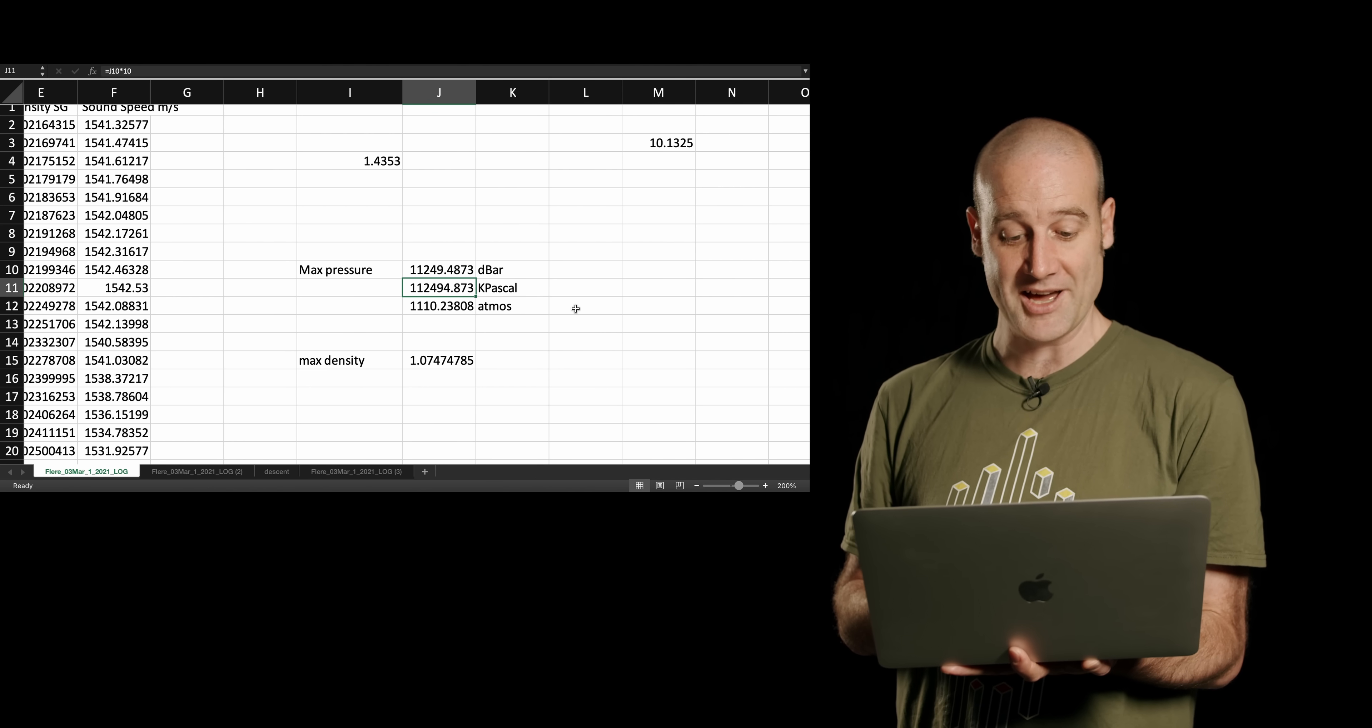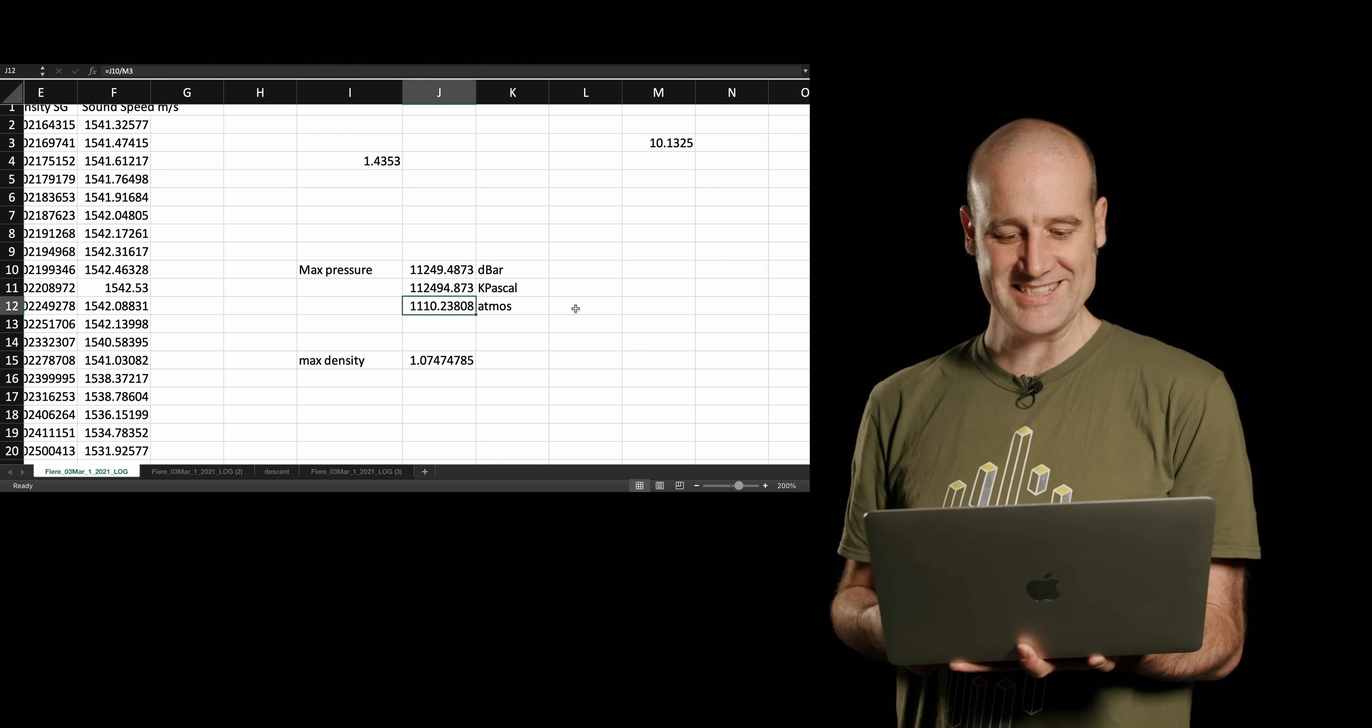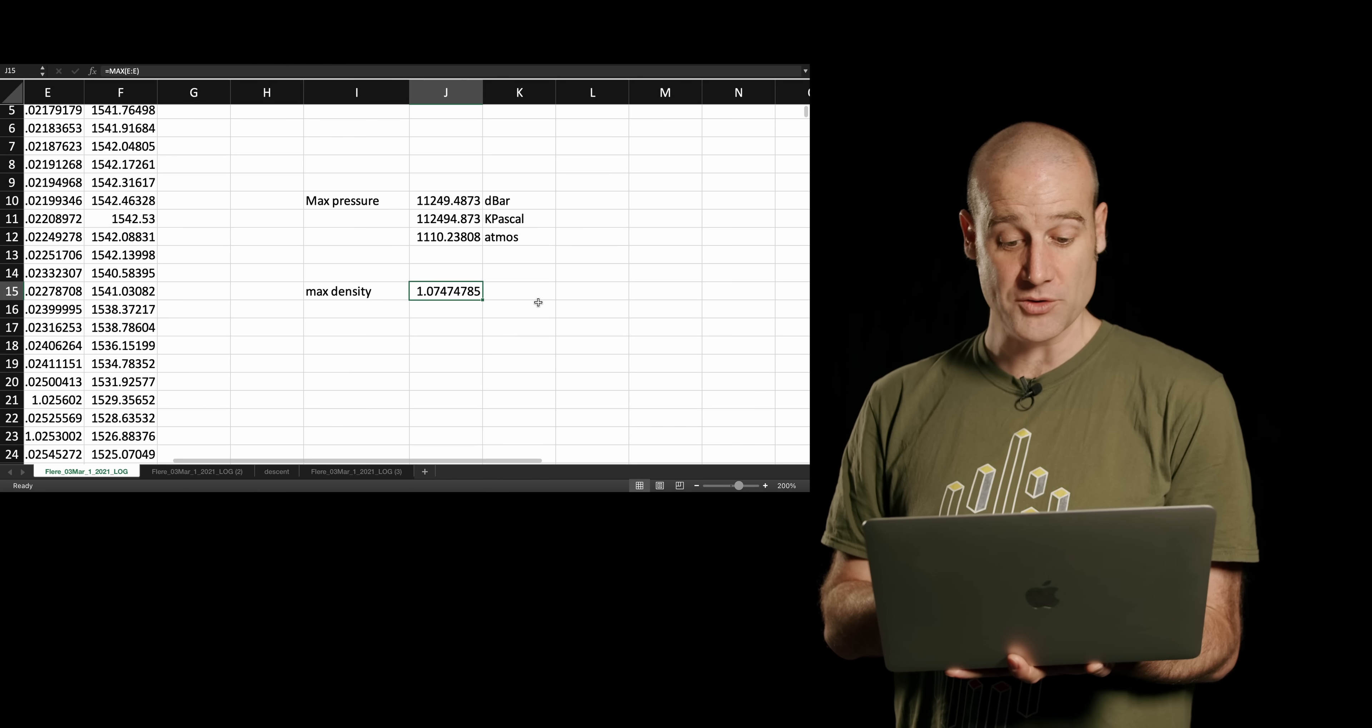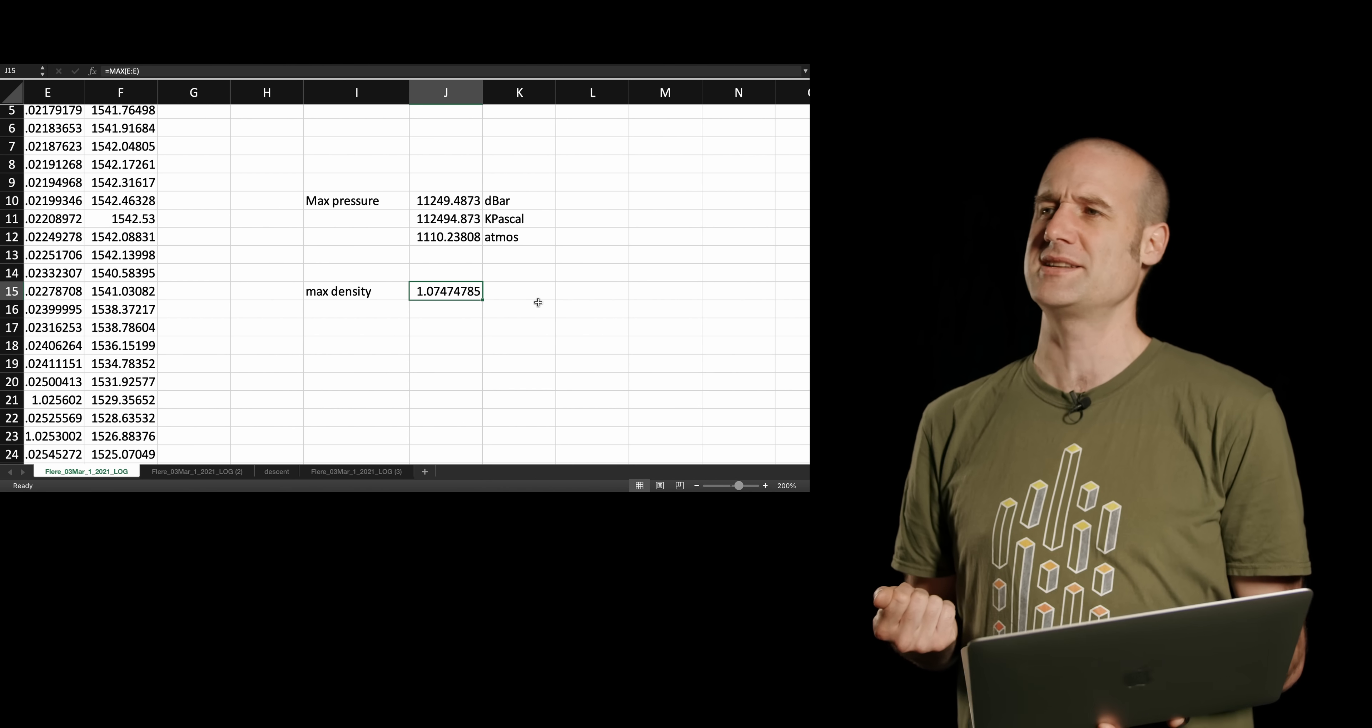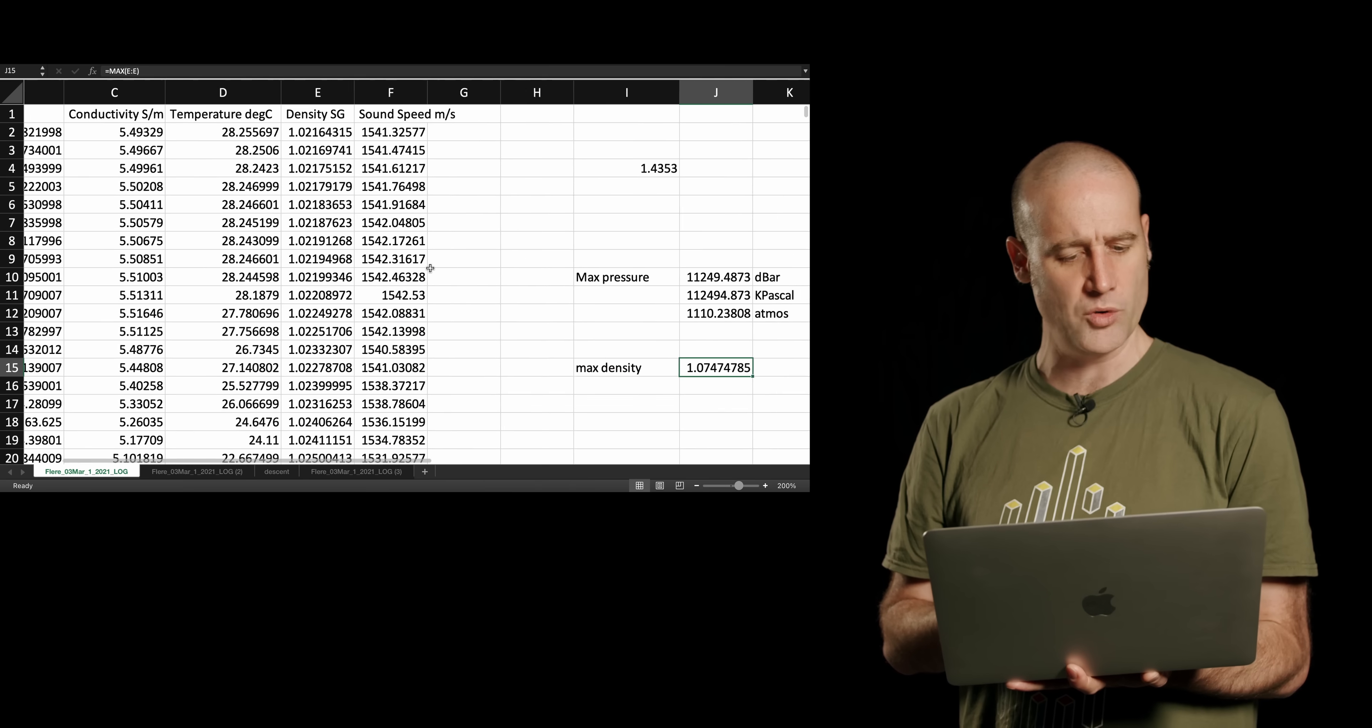We're not going to use it for our purposes. And the very first thing I did over here, you can just see I calculated a few values. Oh, that's the minimum temperature. They got down to 1.4 degrees. Very interesting for water. And I got the max pressure. So, the max pressure was 112,000 kilopascals. Which is 1,110 times atmospheric pressure. Isn't that insane? They were at 1,000 times atmospheric pressure. Just absolutely bonkers. And the max density was all the way out at 1.0747.